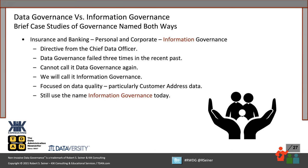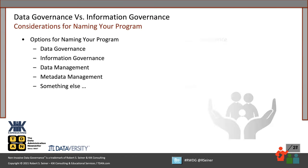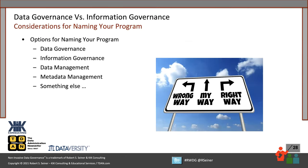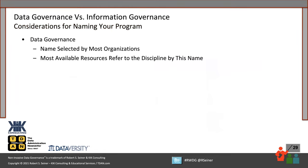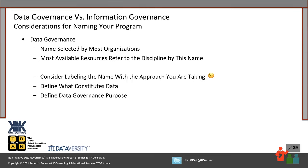They focused on the quality of data — very structured data — but they still use the name information governance today because they've been more successful with it than with data governance. Again, not the ideal reason for calling it information governance, but call it what makes sense to your organization. So there are a bunch of different options: data governance, information governance, data management, or something else. The name being used by most organizations I see these days and written about the most is data governance. But I think that gap is quickly closing as information governance becomes more used in different organizations around the world.